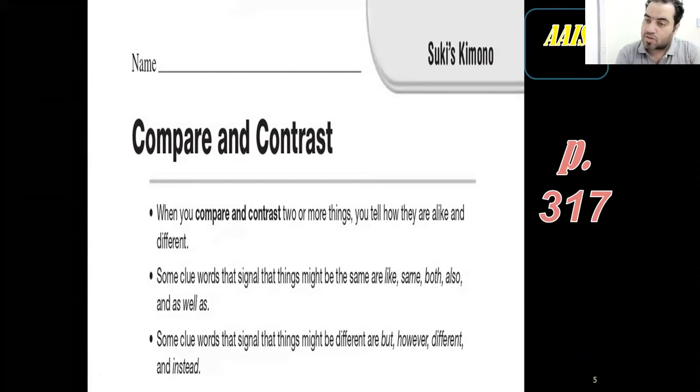When you compare and contrast things, then you're telling me what is similar, what is different between these two options or these two things. If you would like to know how things are similar, you look for words like the same, like, as, as well, both.